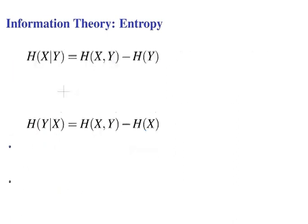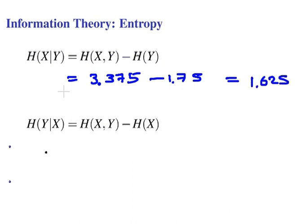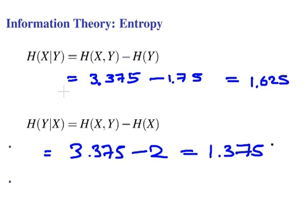In the first case, we have H(X|Y) = H(X,Y) - H(Y) = 3.375 - 1.75, so we end up with 1.625 bits. And in the second case, H(Y|X) = 3.375 - 2, and that gives us 1.375 bits. Remember to put in the unit there, bits.